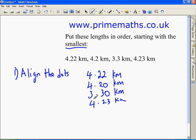Next, we look at the units. 3 is less than 4, so the first number would be 3.3 kilometers. Strike it through.